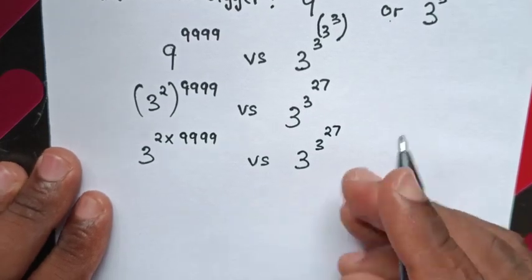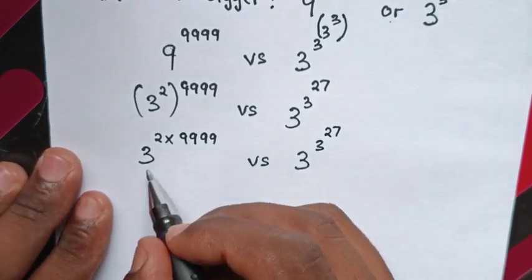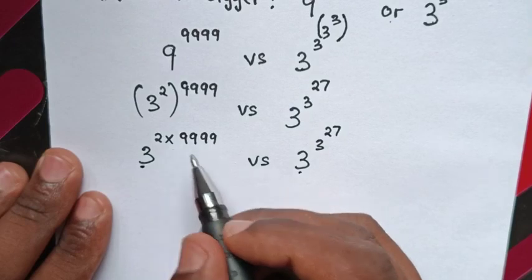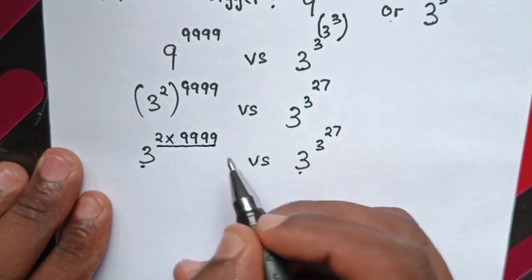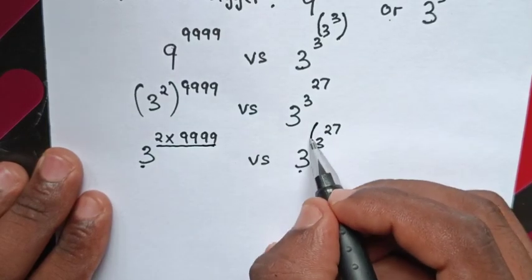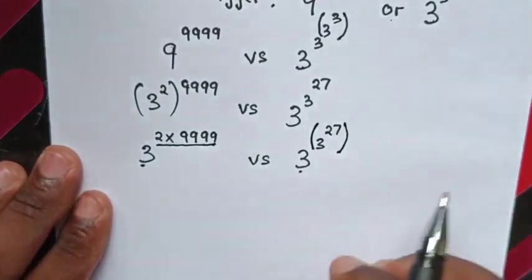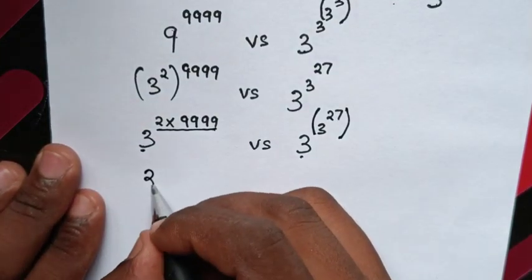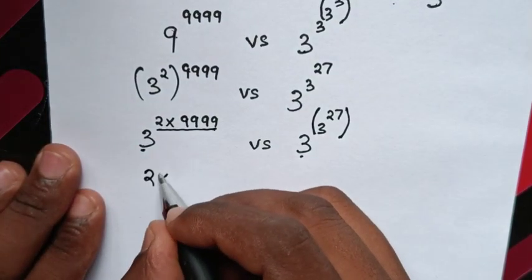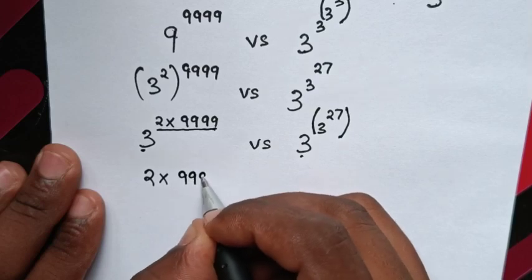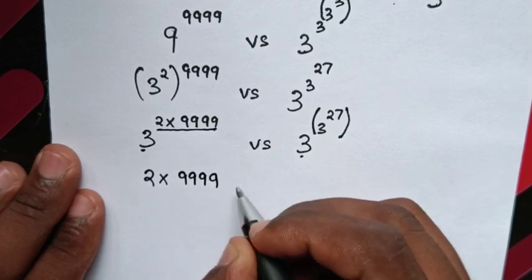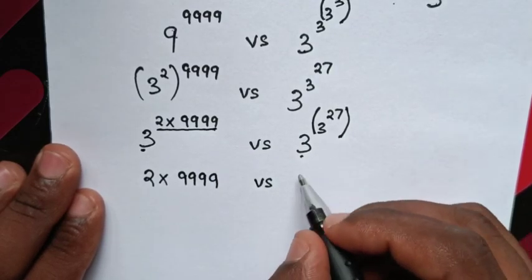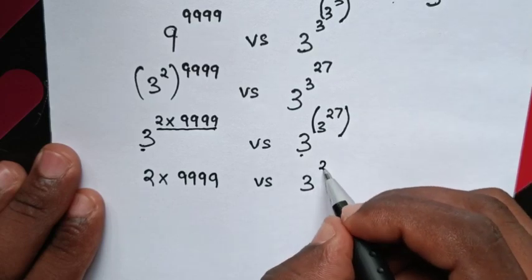Now we can see we have the same base 3 on both sides. So we compare the powers. The left side has power 2×9999, and the right side has power 3^27.